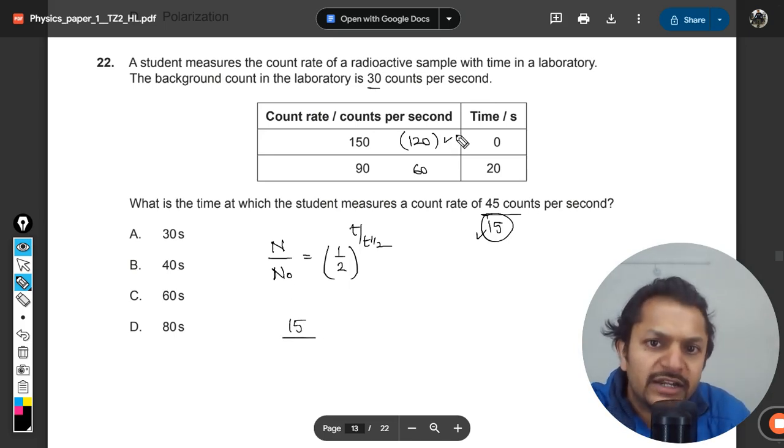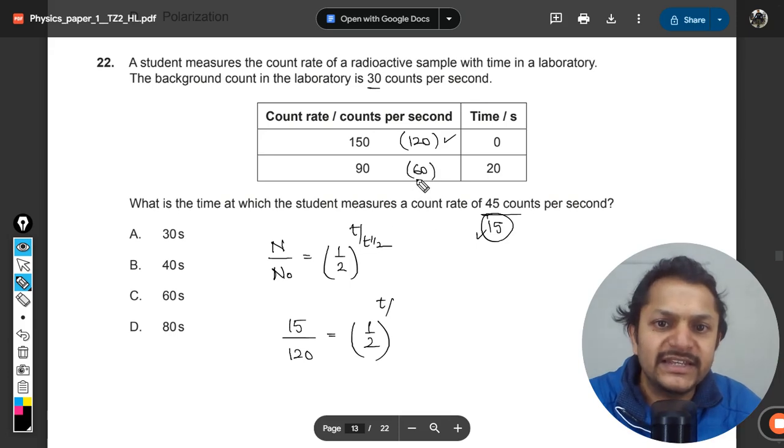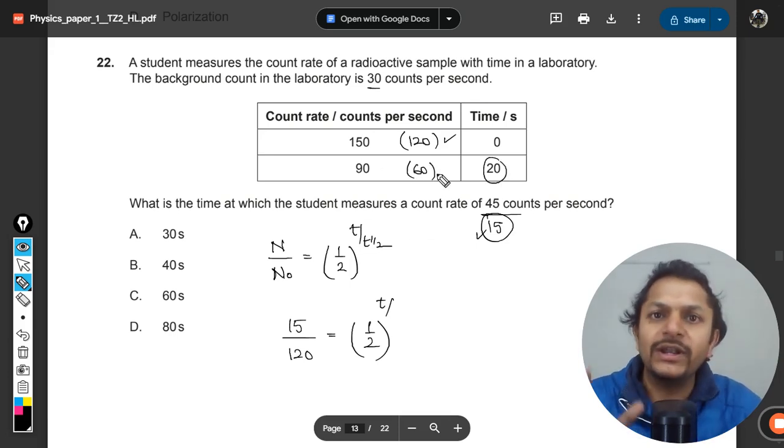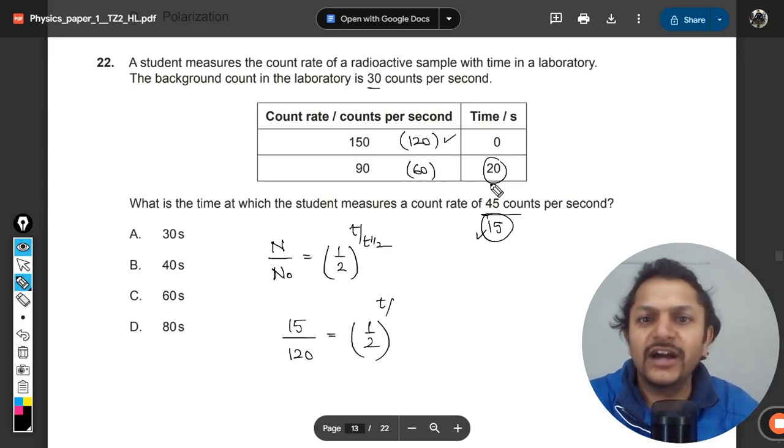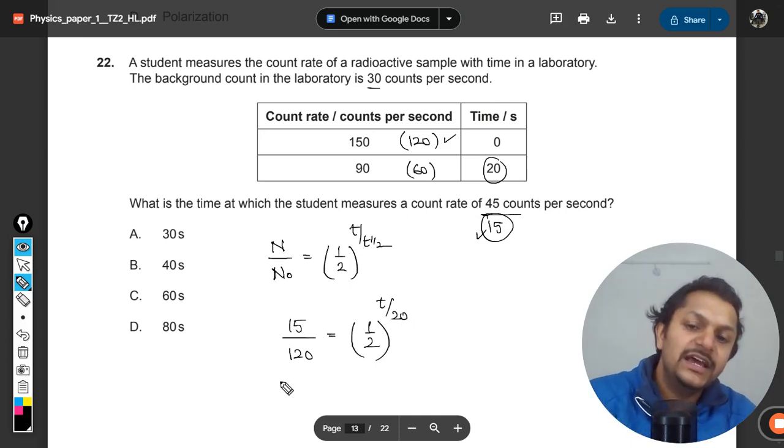n number you want is 15, and n naught you started with is 120. Time you want to find, and half-life is not given. But be very careful: you started with 120 and now it is 60. This clearly shows that 20 is the half-life, because it went from 120 to 60 in 20 seconds.